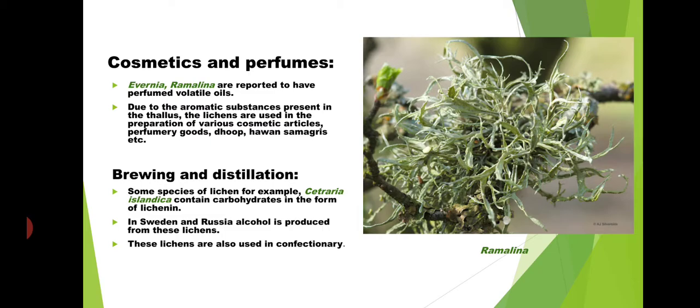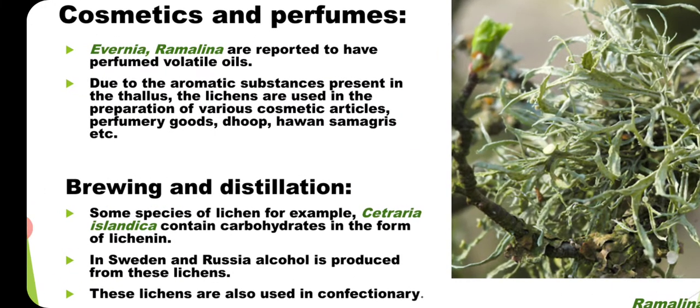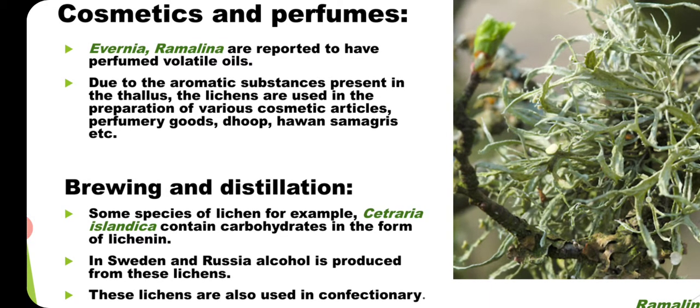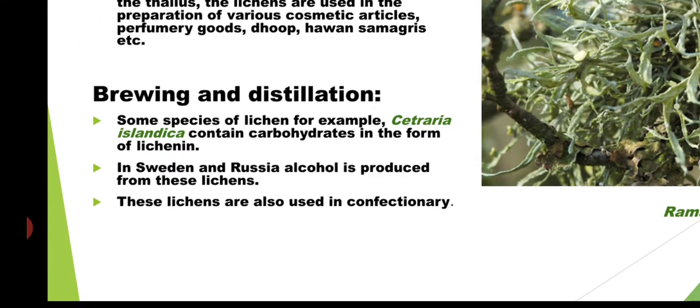Some lichens are used as cosmetics and perfumes. Evernia and Ramelina are reported to have perfumed volatile oils due to aromatic substances present in the thallus. Lichens are used in various cosmetic articles, perfumes, and also in havan samagaris — materials used in religious rituals.